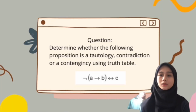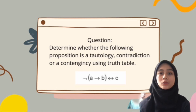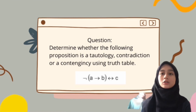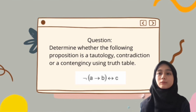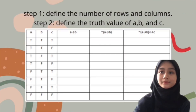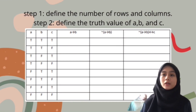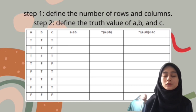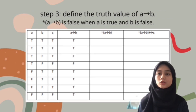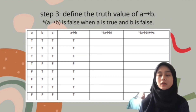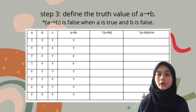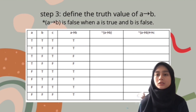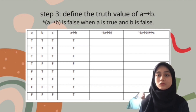Now we're moving to our first example. The question given is: determine whether the following proposition is a tautology, contradiction, or contingency for ¬(A → B) ↔ C, using a truth table. The first step is to define the columns and rows to make the truth table, then define the truth values of A, B, and C. A → B is false when A (the hypothesis) is true and B (the conclusion) is false.